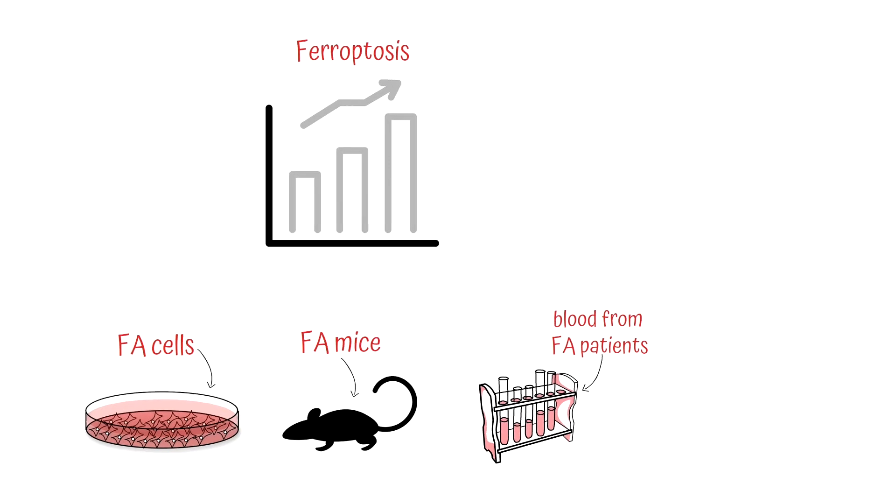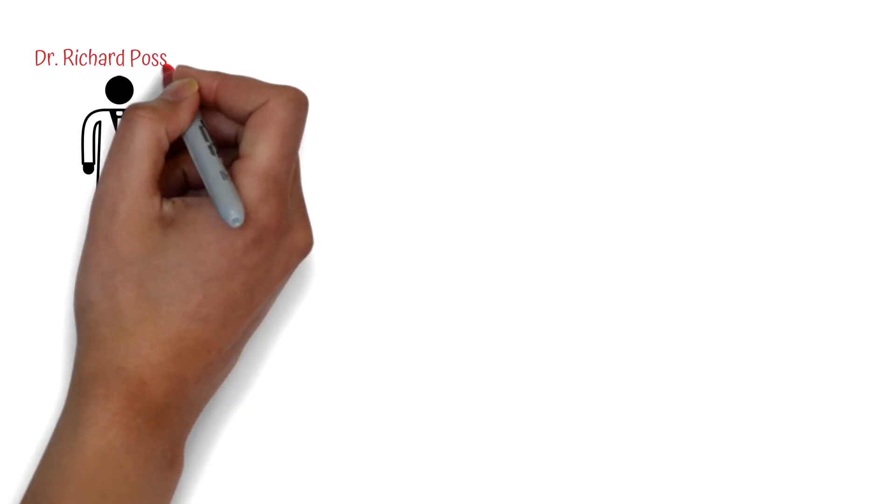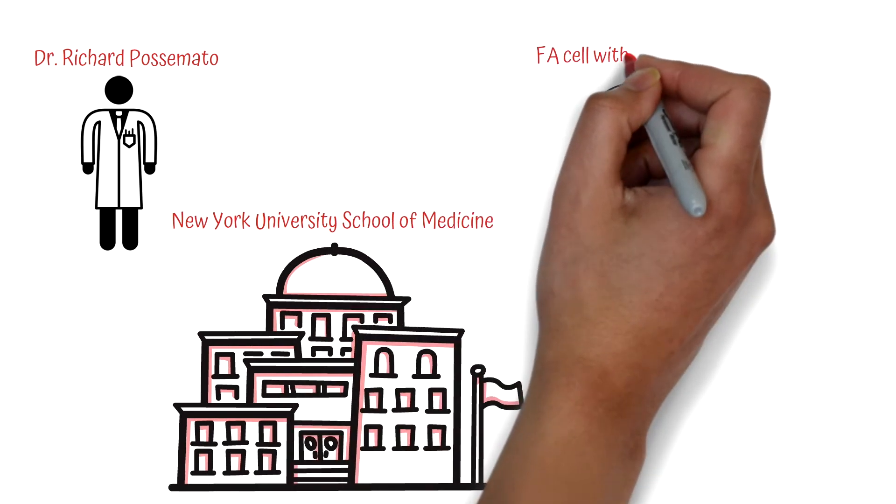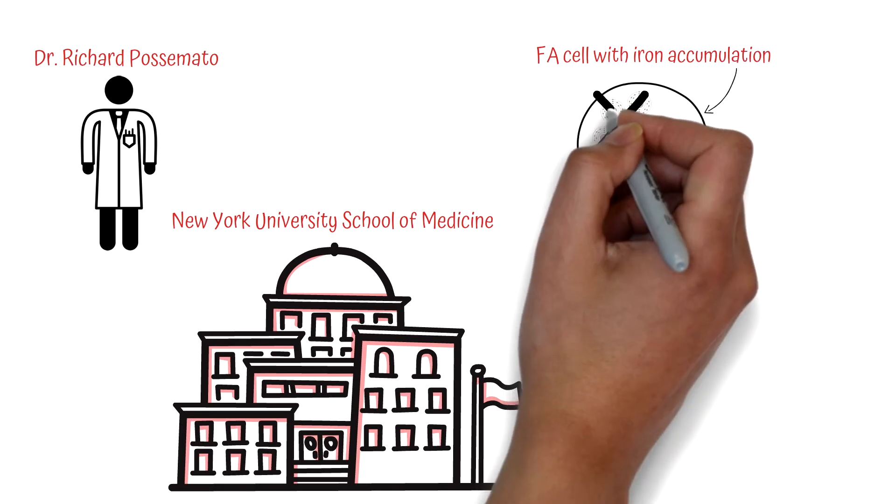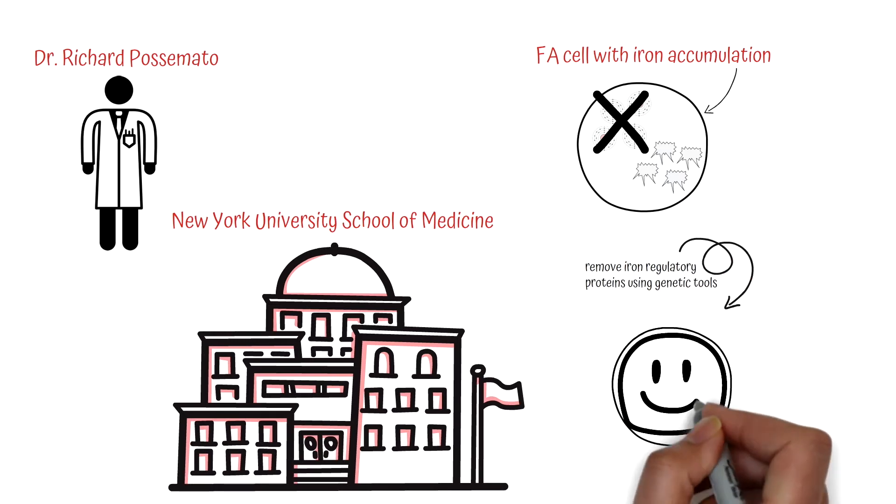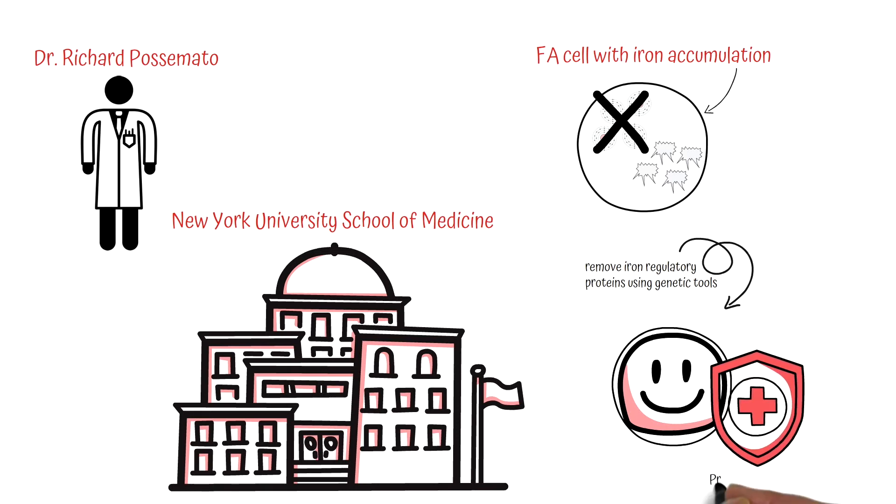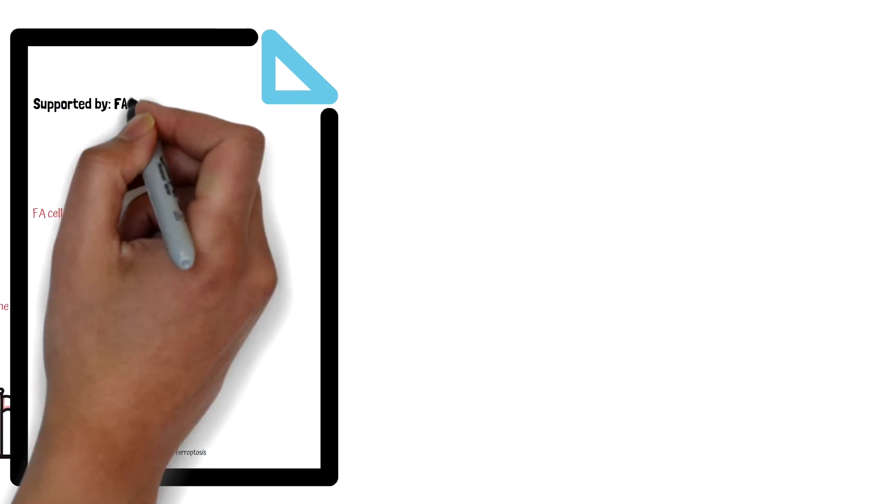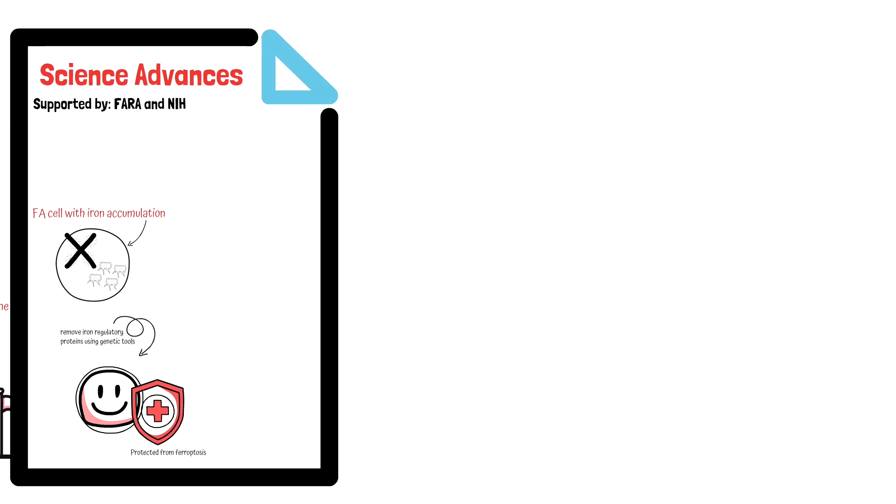Evidence of ferroptosis has also been seen in FA mouse models and blood samples from FA patients. Knowing that frataxin loss contributes to ferroptosis has opened a new potential therapeutic avenue. Richard Pasinato and his lab at the New York University School of Medicine discovered that it was possible to block the iron accumulation caused by loss of frataxin by removing iron regulatory proteins using genetic tools. FA cells with decreased levels of iron regulatory proteins were protected from ferroptosis. The results of this FARA and NIH supported work have been published in the journal Science Advances. We hope that this new understanding can lead to a new kind of treatment approach.